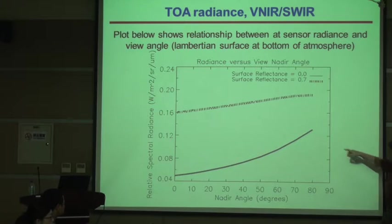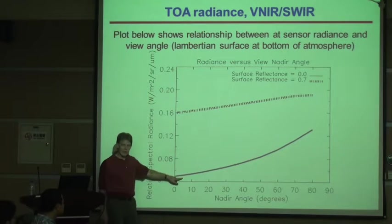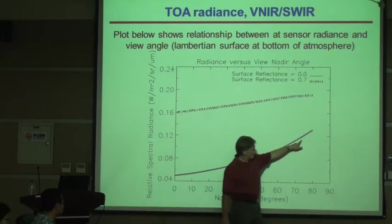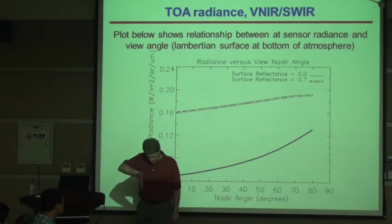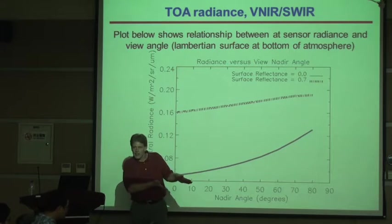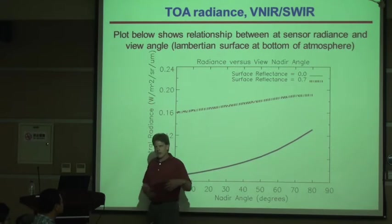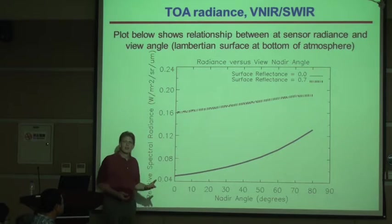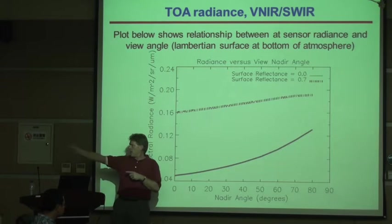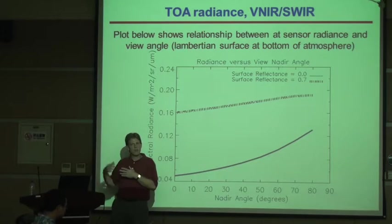TOA radiance goes up in both reflectance cases as nadir angle increases, more dramatically for zero reflectance. At zero reflectance there's still non-zero radiance, but as I look off-nadir it increases. Looking at water straight down, it looks quite blue; looking toward the edges, it looks less blue because more scattering fills in all the other colors. Similarly, looking straight up on a clear day you see blue sky, but toward the horizon you see whiter sky because of the longer path through the atmosphere.